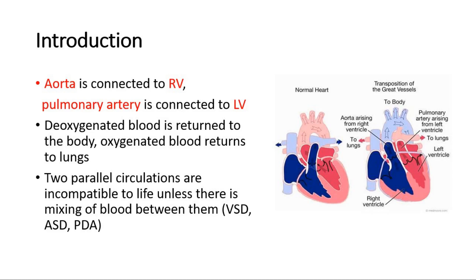These two parallel circulations are not suitable for life unless there is a mixing of blood between them, caused by other heart defects such as ventricular septal defect (VSD) causing a left-to-right shunt, or atrial septal defect (ASD) and patent ductus arteriosus (PDA).